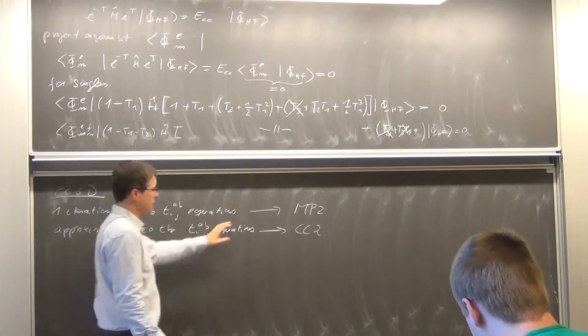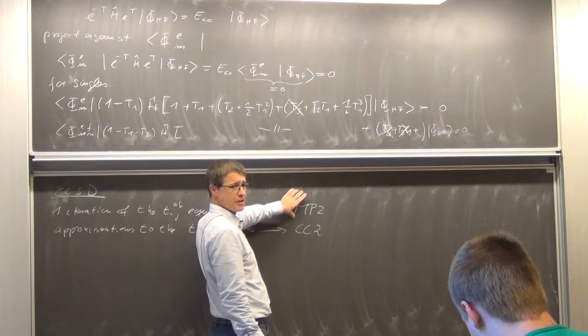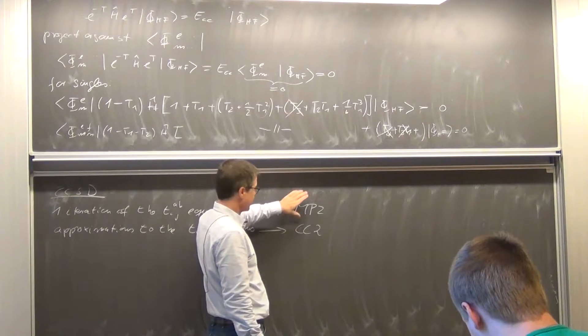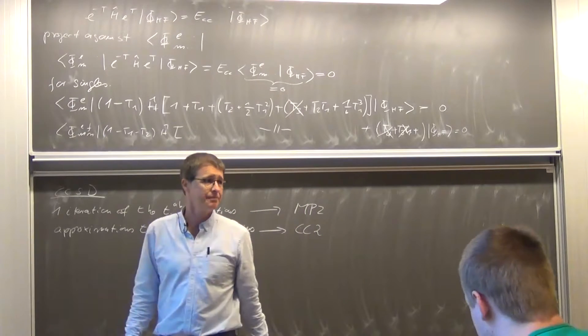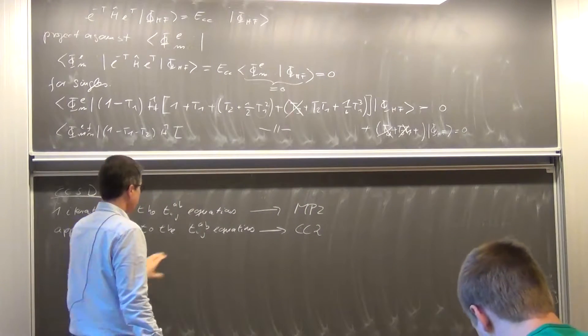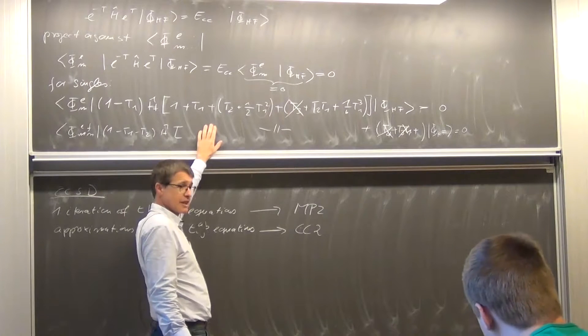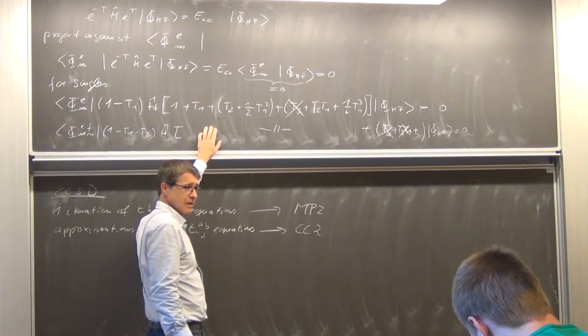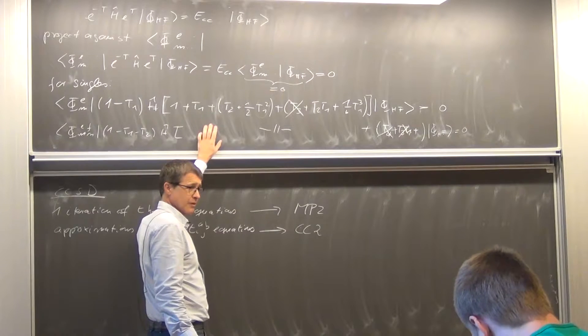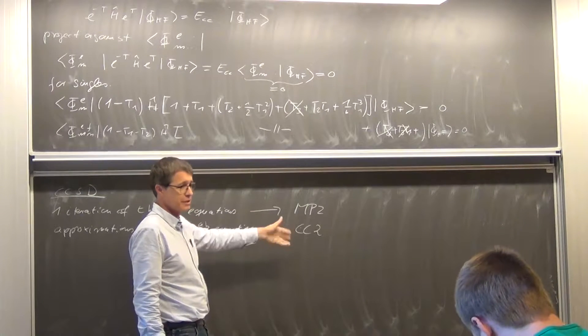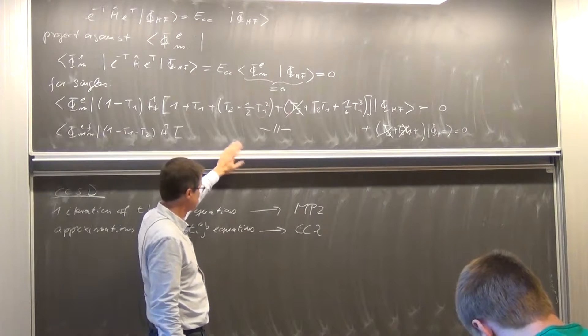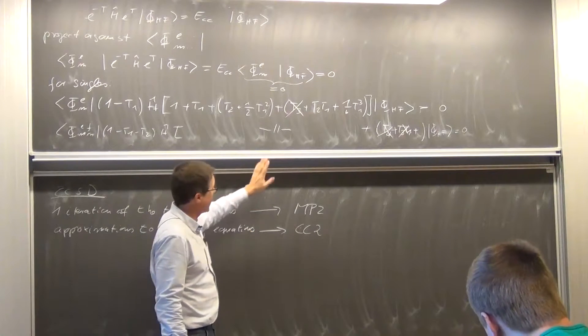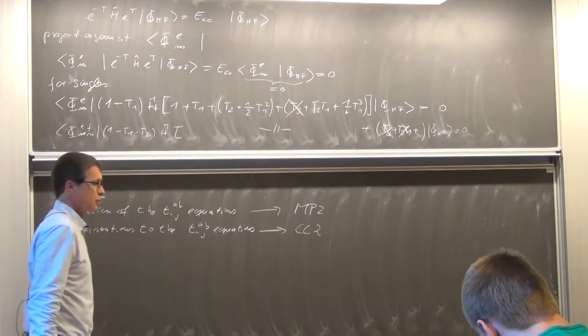When MP2 is also making an approximation to doubles equations, here you throw everything out except the bare integral divided by orbital energies. This is still equations which depend on the single equations. So in CC2 you have a coupling between double and single excitation operators or equations, but you have thrown terms out.